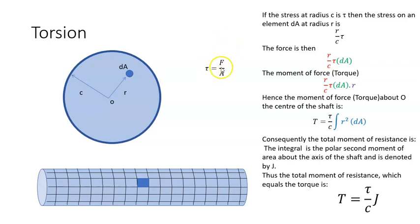But shear stress is force over area, so if I multiply the shear stress by the area, I'll get the force. So r over c times tau, multiplied by the area, dA, that will give me force.